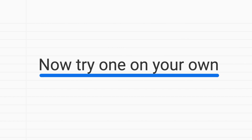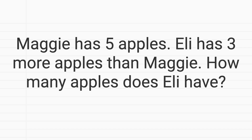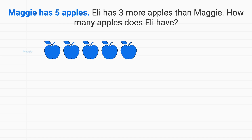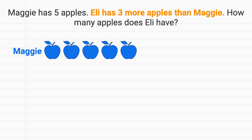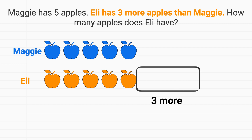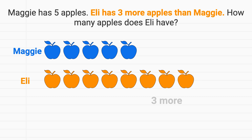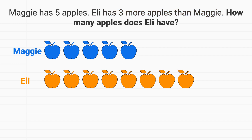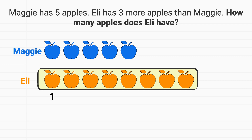Now it's time for you to practice one of these on your own. Maggie has five apples. Eli has three more apples than Maggie. How many apples does Eli have? In this problem, we start with Maggie, who has five apples. Then we can look at Eli. Eli has three more apples than Maggie. We start by giving him the same amount as Maggie, but then we have to give him three more: one, two, three more apples. Then, to find out how many apples Eli has, we'll count up all of his apples: one, two, three, four, five, six, seven, eight apples in total. We would say Eli has eight apples.